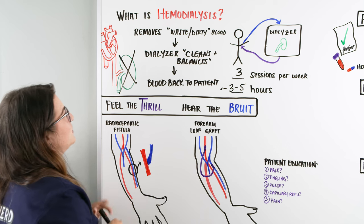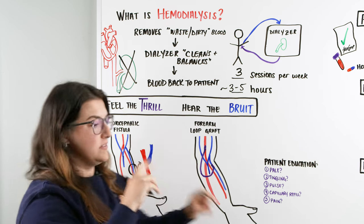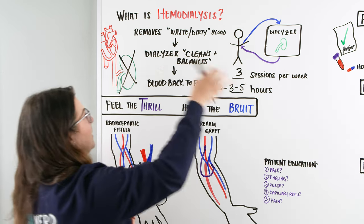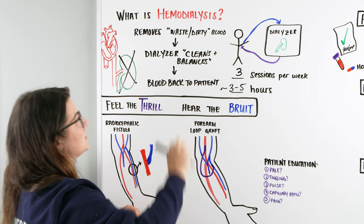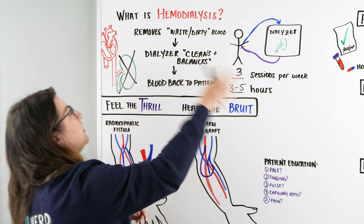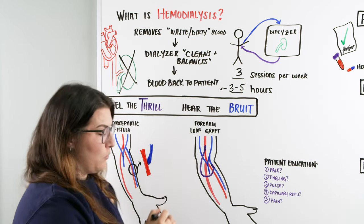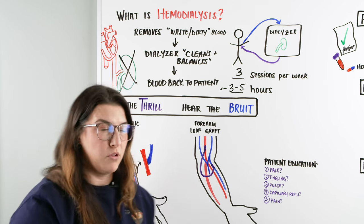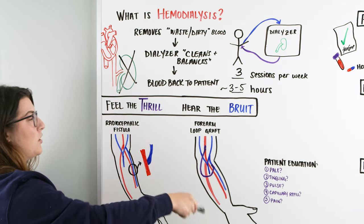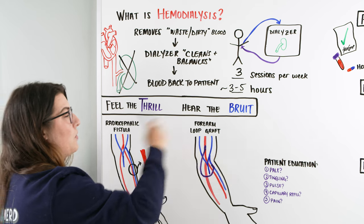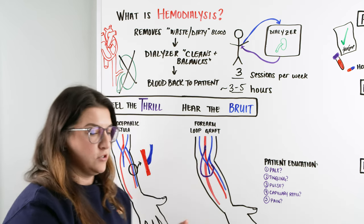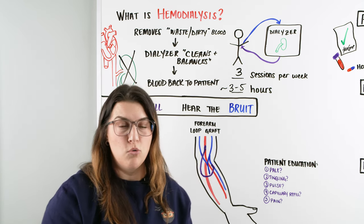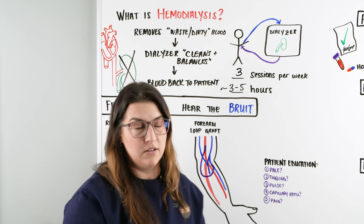The dirty, waste-filled blood goes to the dialyzer, gets cleaned and balanced, and then the blood is put back into the patient. There's a lot more that goes on within these sessions, but this is the overview. Now let's talk about how this occurs — specifically, at what point does the patient need hemodialysis.